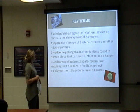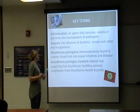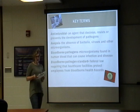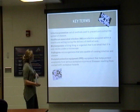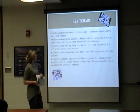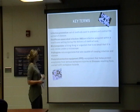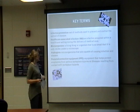Some key terms: antimicrobials are agents that destroy, resist, or prevent the development of pathogens. Asepsis is the absence of bacteria, viruses, and other microorganisms. Blood-borne pathogens are microorganisms found in the human blood that can cause infection and disease. The blood-borne pathogen standard is a federal law requiring healthcare facilities to protect employees from blood-borne health hazards. Infection prevention is a set of methods used to prevent and control the spread of disease. Healthcare-associated infections are infections acquired while at a medical facility while receiving care. Microorganisms are a living thing so small they can only be viewed under a microscope. Pathogens are microorganisms capable of causing infection and disease. Personal protective equipment is equipment that helps protect employees from serious workplace injuries or illnesses resulting from contact with workplace hazards.